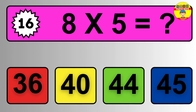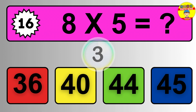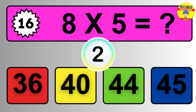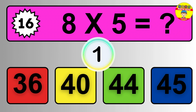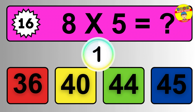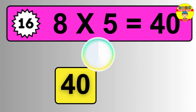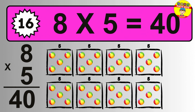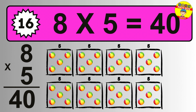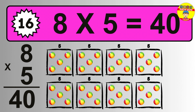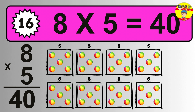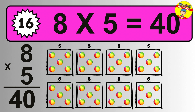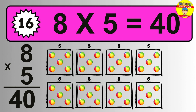Question sixteen: eight times five equals what? The answer is eight times five is forty. To calculate, we have eight groups with five balls each. So how many balls do we have? Forty balls.